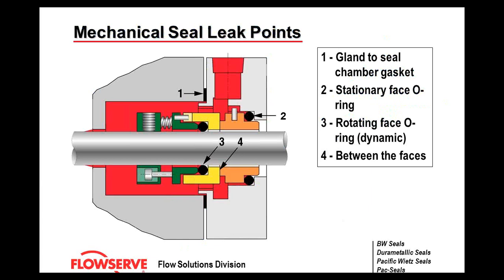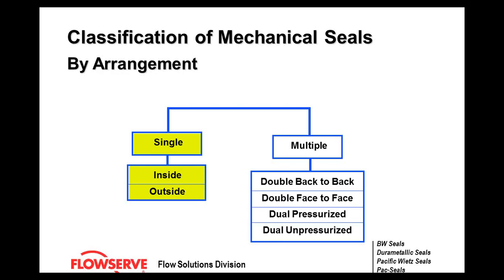Item number three is the dynamic o-ring. That o-ring is called dynamic because it actually moves with the mechanical seal — it tracks with the springs. As it tracks, there's a possibility it can erode, wear, or fret, leading to a leak. With dirts, contaminants, or off-design operation, these can all wear the seal and cause a leak.